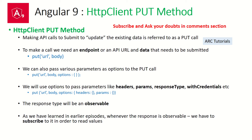Whenever we make an API call to an endpoint to update an existing record or resource, we refer to it as a PUT call or PUT method. To make this call we use the dot put method, which takes two mandatory parameters: the URL and the body — the new data that needs to be updated for that resource. We can also pass optional parameters like headers, params, response type, and withCredentials. The response type will always be an observable, so we will have to subscribe to it to process the data.